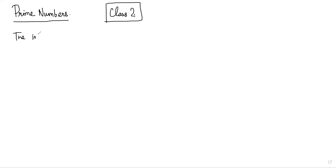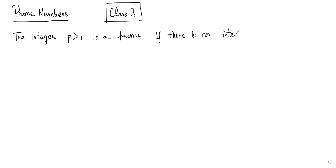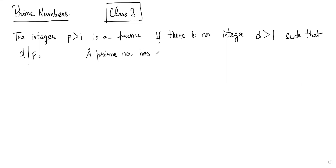The integer p greater than one is a prime if there is no integer d greater than one such that d divides p. Basically, there should be no divisor of p where d is greater than one. So a prime number has no factors other than one and itself. That is something you probably already know.